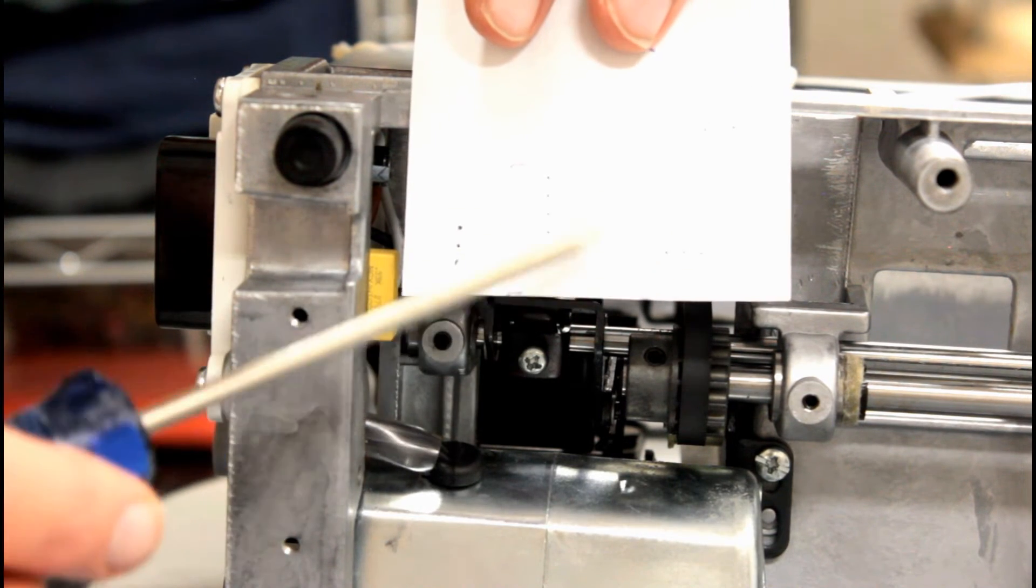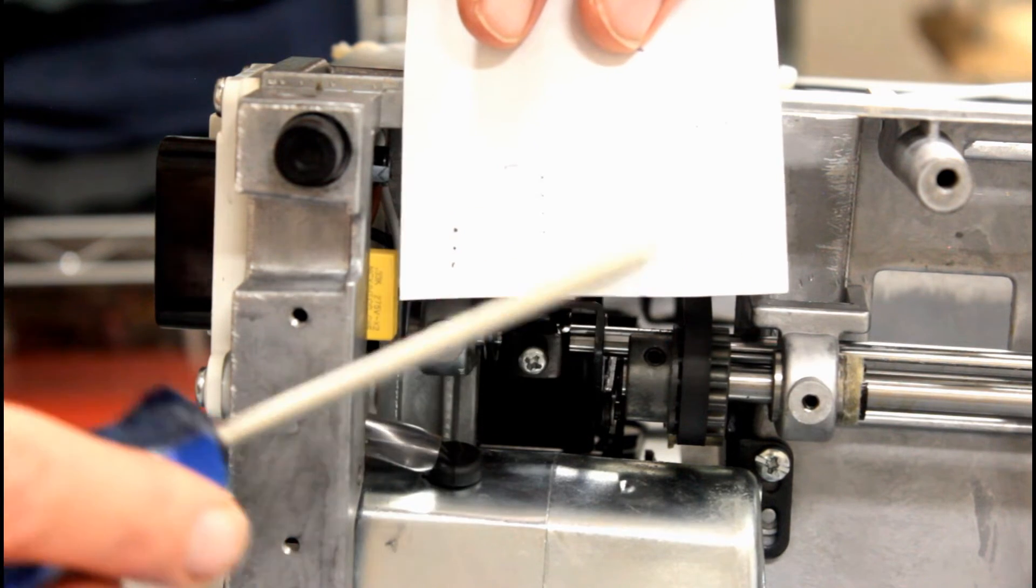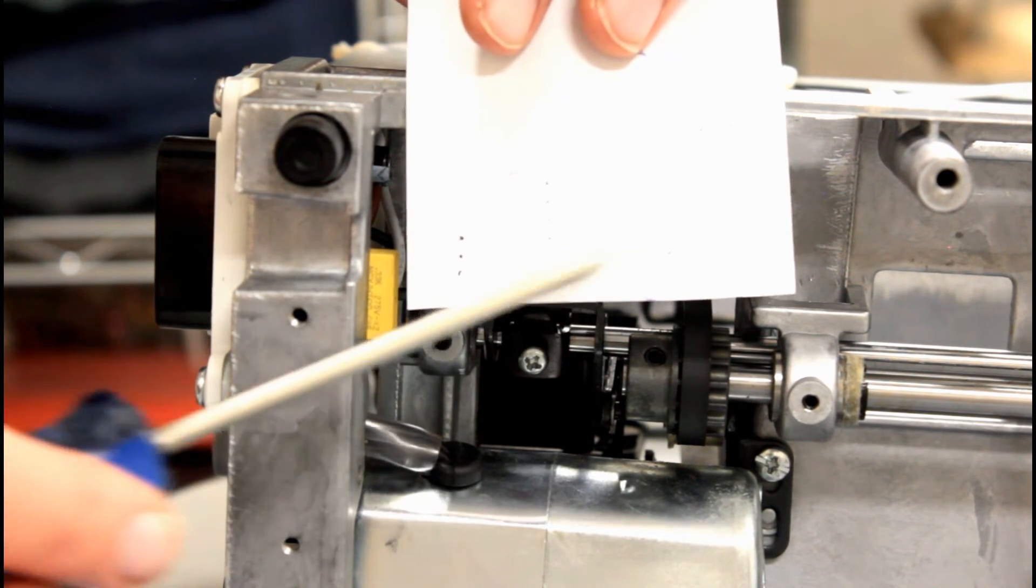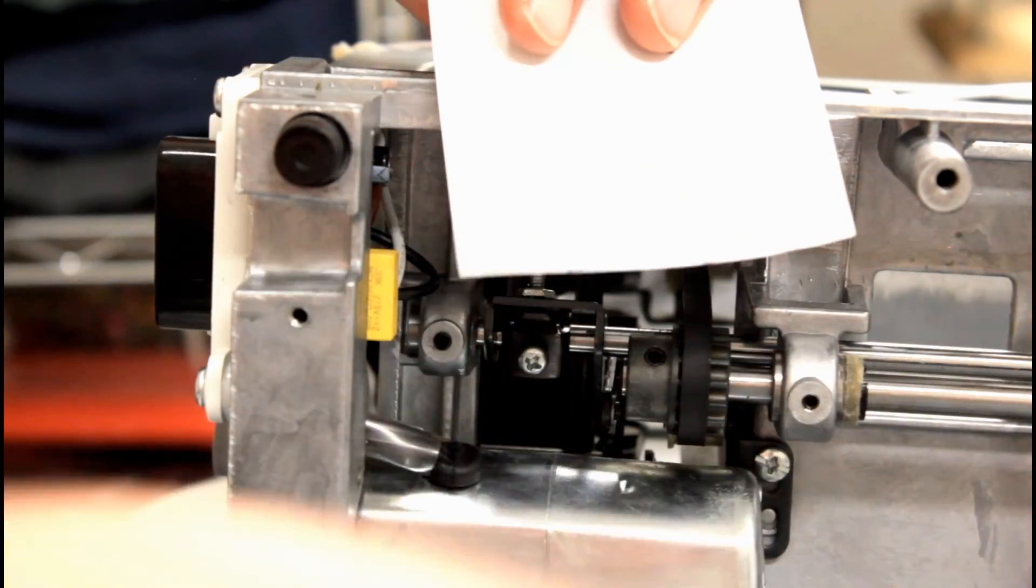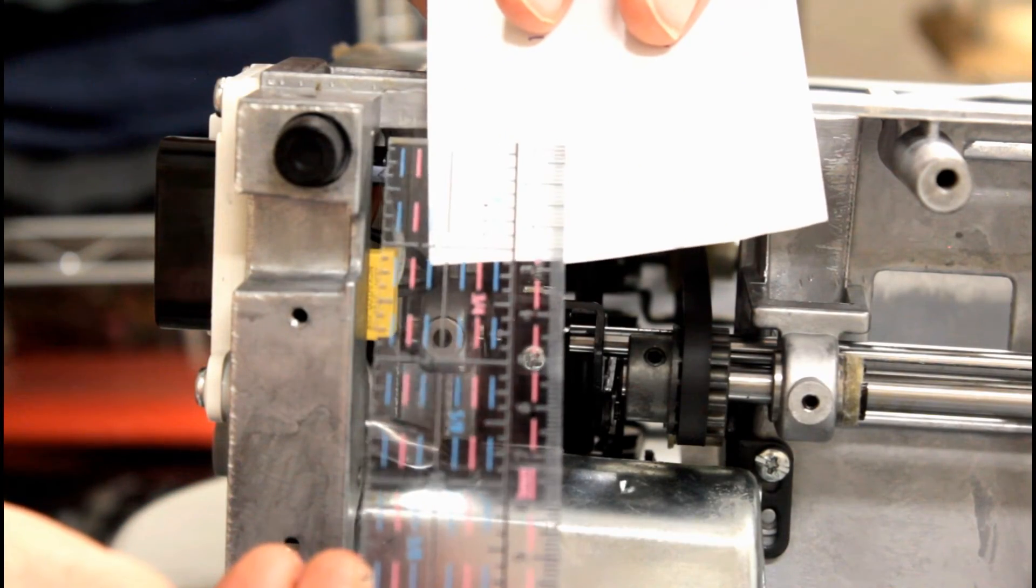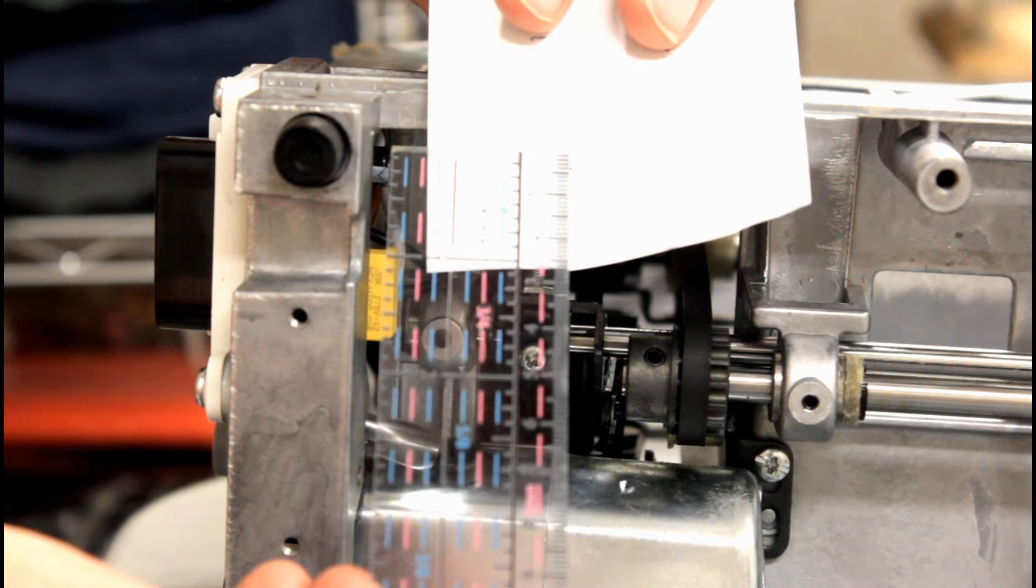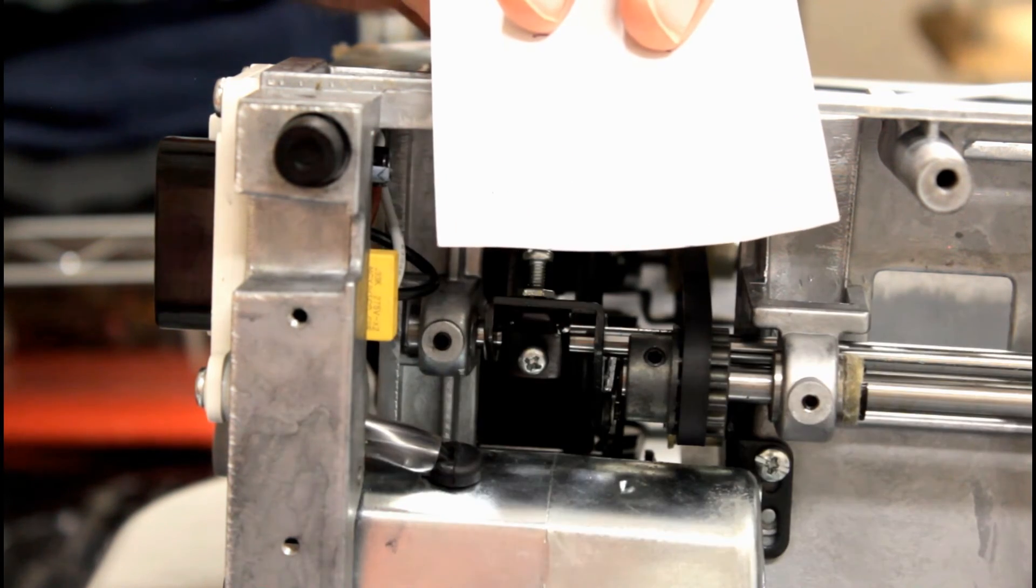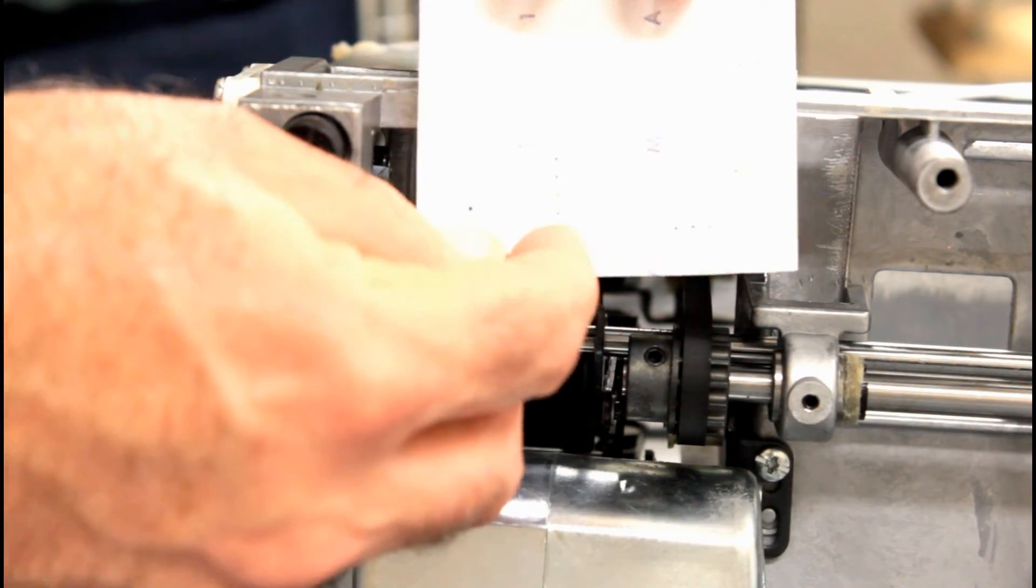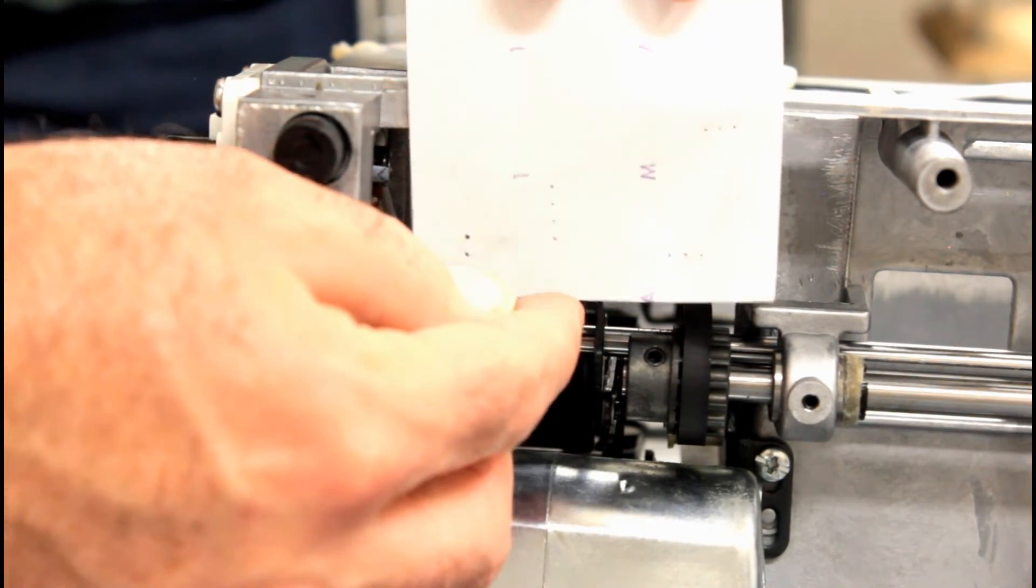So just use a piece of paper. It makes it easy to measure. Do about four to five stitches, and then I get my ruler on it like this, and then you can kind of measure the length of the stitch using the ruler.